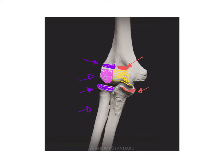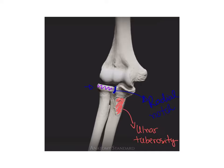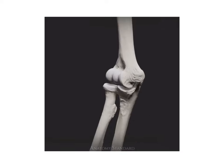The radius head also articulates with the ulna bone at the proximal end. The part of the ulna that is touched by the head of the radius is called the radial notch of the ulna. We can also see a rough spot — a tuberosity — in the ulna bone, called the ulnar tuberosity. Similarly, the radius bone has a rough spot called the radial tuberosity, which is the point of attachment for the biceps brachii muscle.